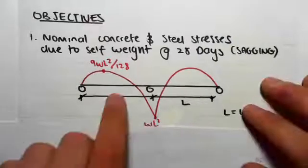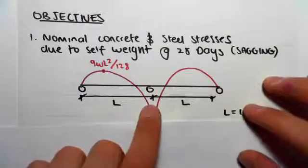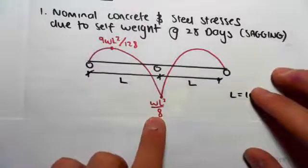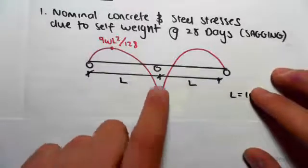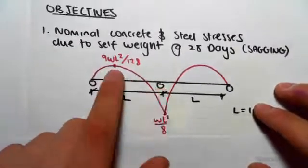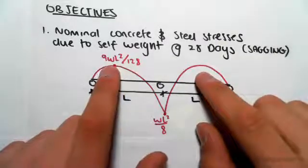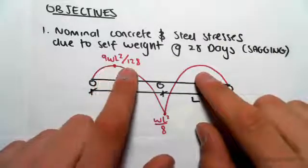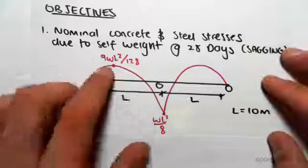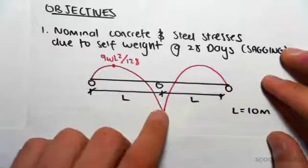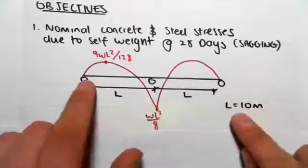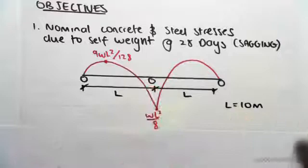I'm providing you with the bending moment diagram because this is statically indeterminate. The maximum hogging moment is wL² on 8 at the continuous support, and the maximum sagging moment is 9wL² on 128. We wouldn't expect you guys to work this out because it's statically indeterminate. We're going to say the length of each span is 10 meters.